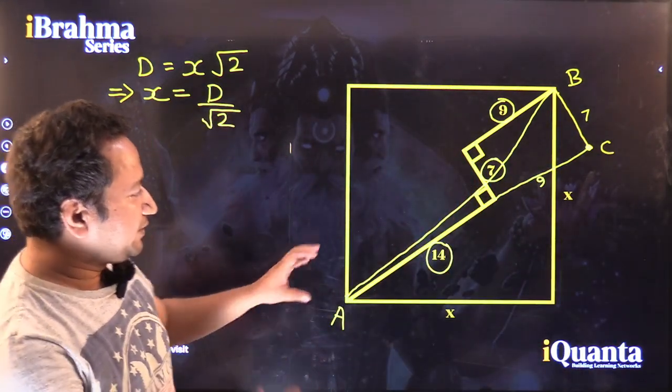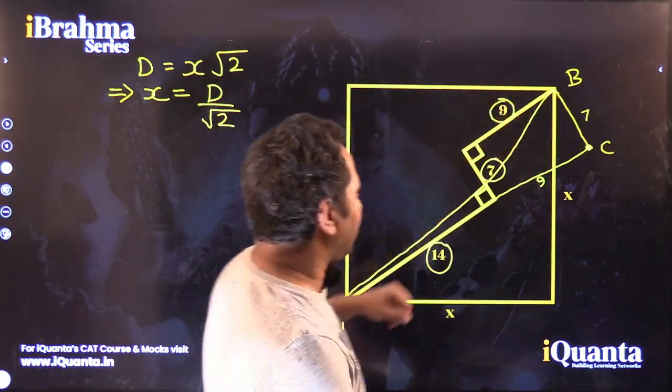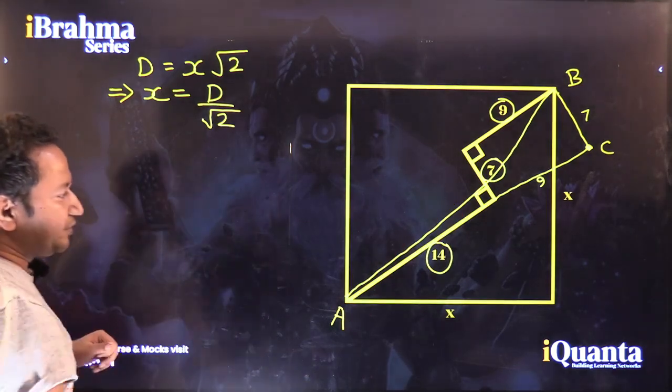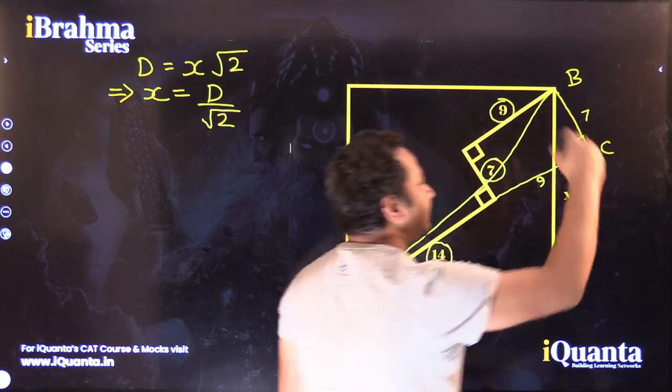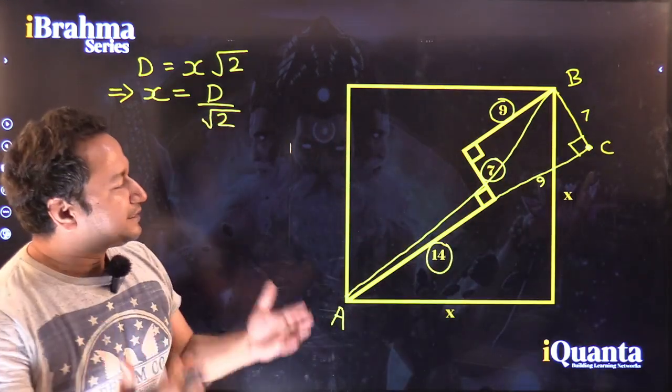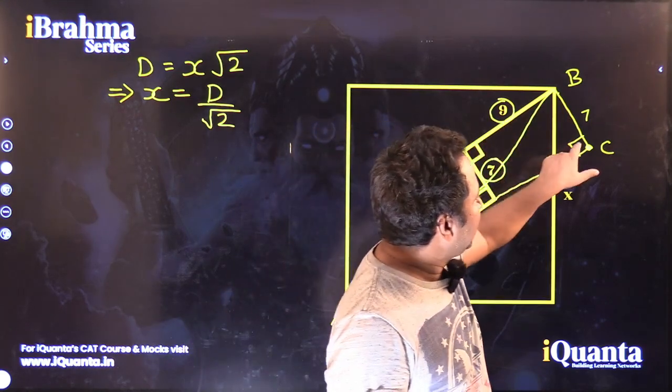So basically, we have moved these two lines 7 and then 9 and this is how we get a right-angled triangle which is ABC and this right-angled triangle is right-angled at vertex C. Because this is right-angled triangle, we have moved parallelly and this is what we get.